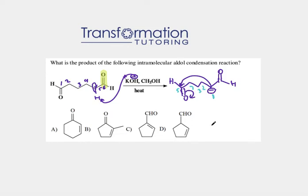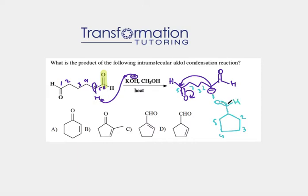Let's go ahead and draw the five-carbon ring: one, two, three, four, and five. Numbering is really, really helpful in organic chemistry, especially when dealing with intramolecular aldol condensation reactions — you can easily lose or gain carbons or put the bond in the wrong place, so I definitely suggest numbering. Now that I know I have a five-carbon ring, my carbon number one has a C=O on it, so I'll draw that C=O like this.